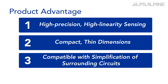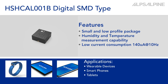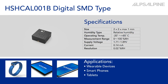The HSHCAA001B is a digital humidity and temperature sensor. It features a small and low profile package, temperature measurement capability, and low current consumption of 140 microamps at 10Hz.